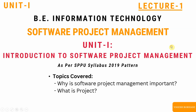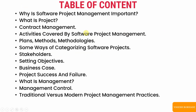Unit 1 is Introduction to Software Project Management. The syllabus content covers: why software project management is important, what is a project, contract management, activities covered by software project management, plans, methods and methodologies, ways of categorizing software projects, stakeholders, setting objectives, business case, project success and failure, management control, and traditional versus modern project management practices. In this video, we'll cover the first two topics.